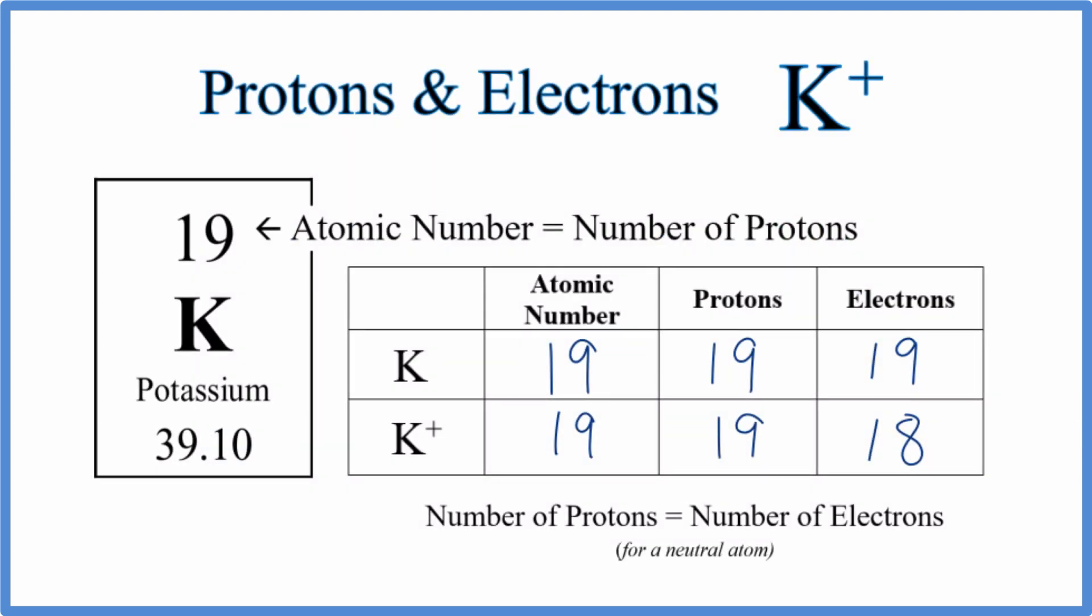If you need help finding the number of neutrons for the different isotopes of potassium, there's a link in the description on how to do that. This is Dr. B with the protons and electrons for K+, the potassium ion. Thanks for watching.